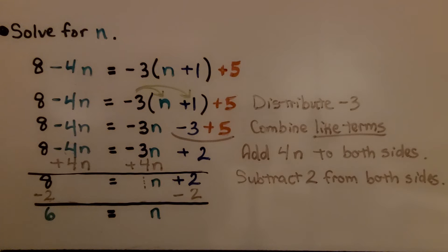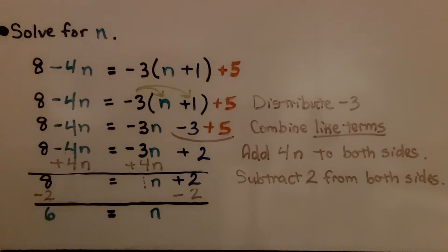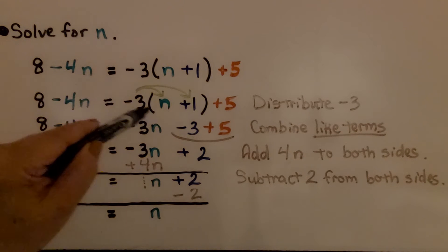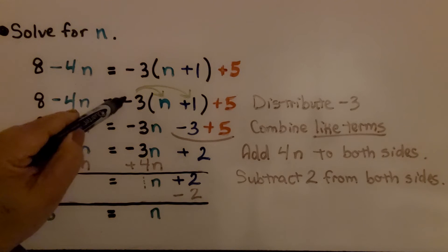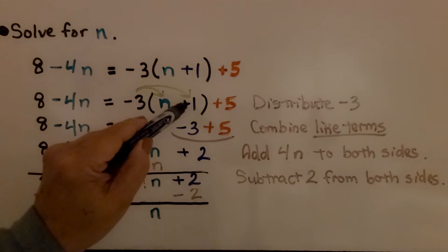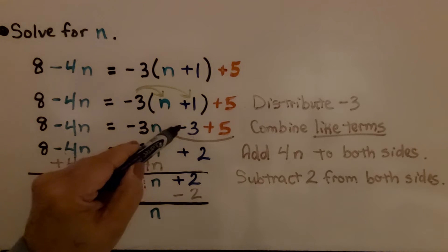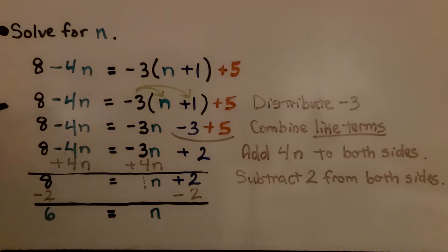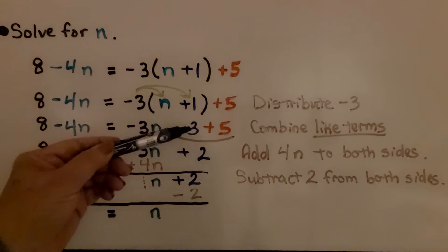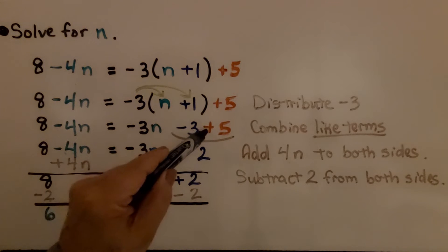Now we're going to solve for the variable n. We have 8 minus 4n is equal to negative 3 times (n plus 1) plus 5. First thing we do is distribute this negative 3. We have negative 3 times n which gives us negative 3n. And we have negative 3 times positive 1 — a negative and a positive multiplied gives us a negative. So we have negative 3 plus 5 on the right side. Our entire equation is 8 minus 4n equals negative 3n minus 3 plus 5. We combine the like terms: negative 3 plus 5.